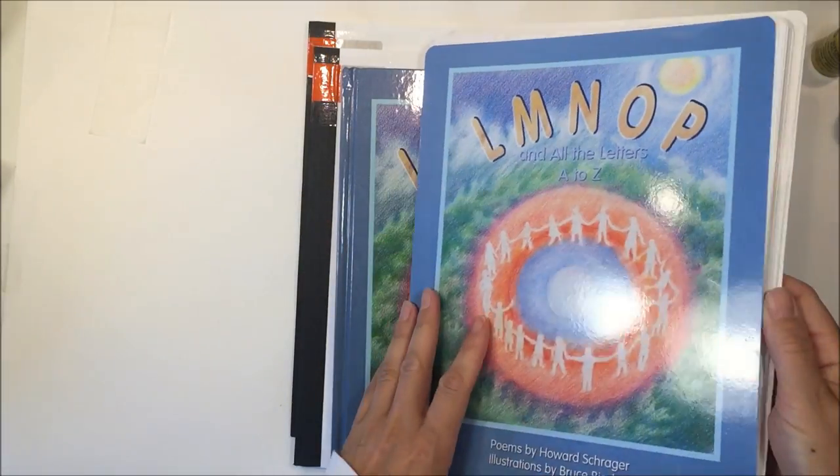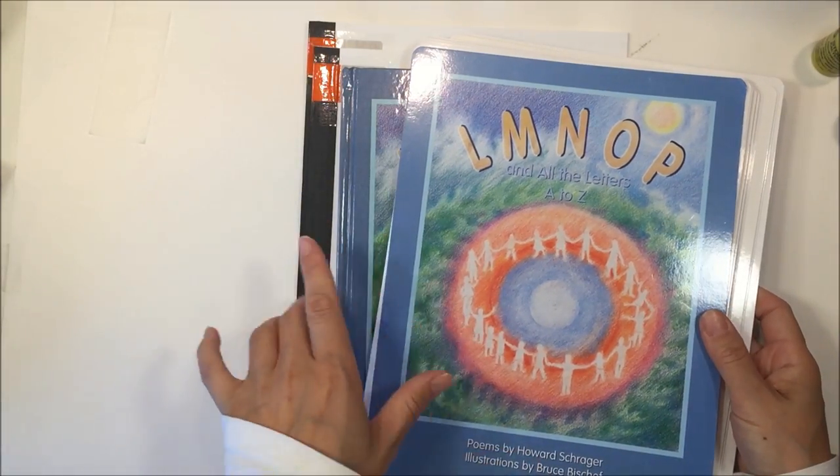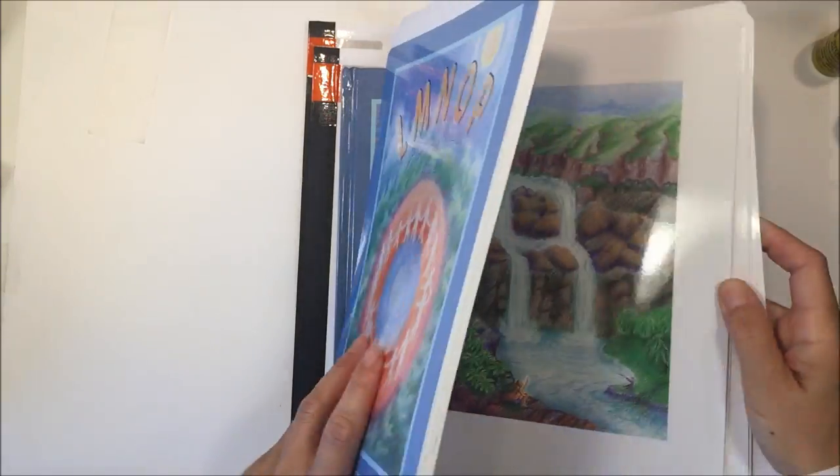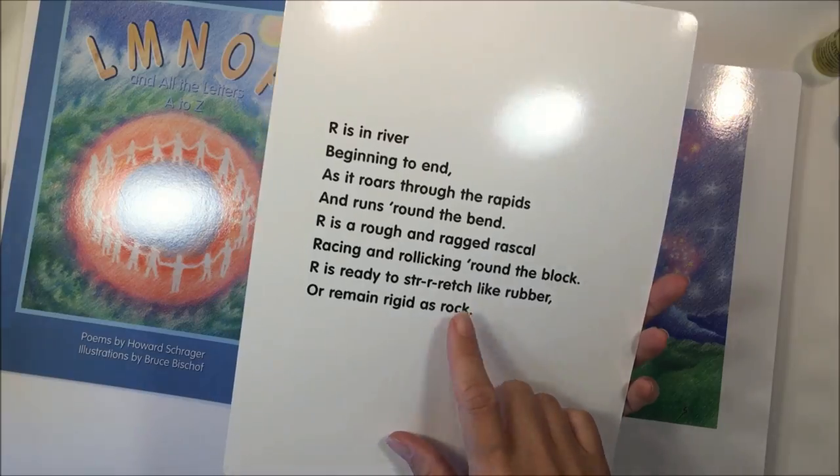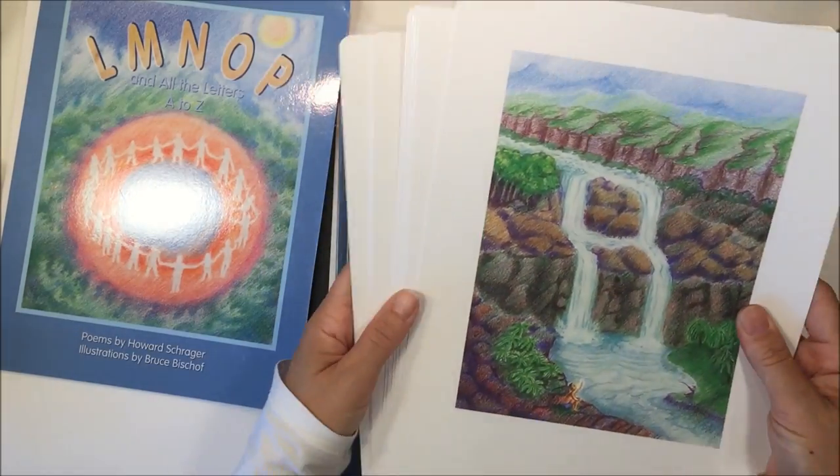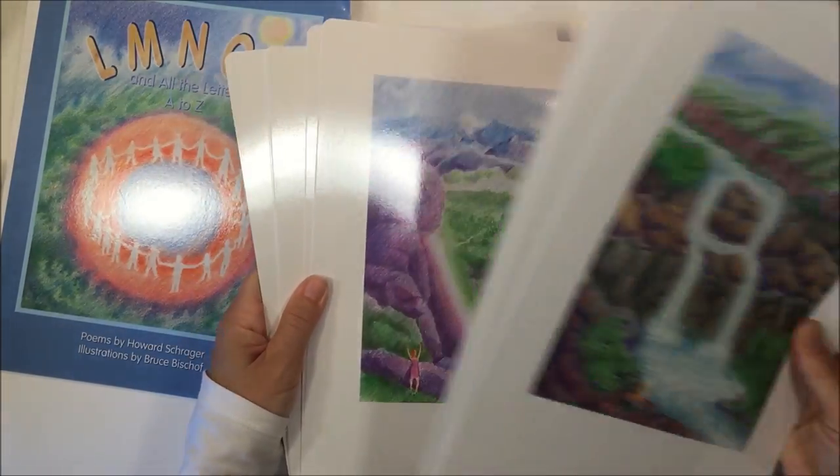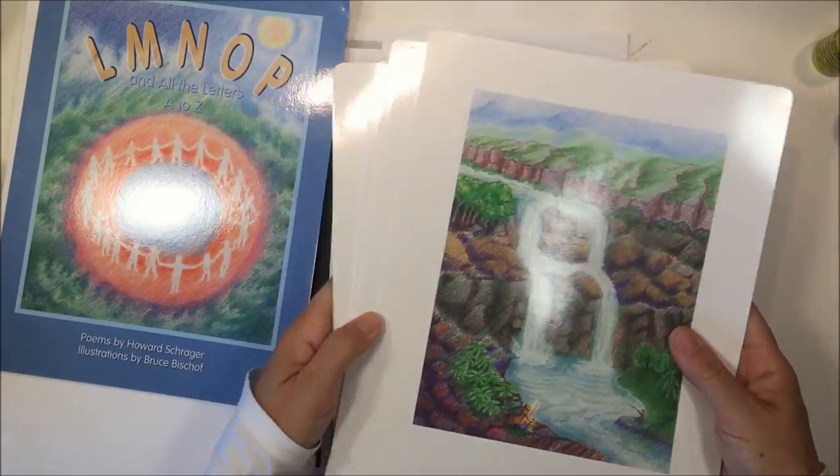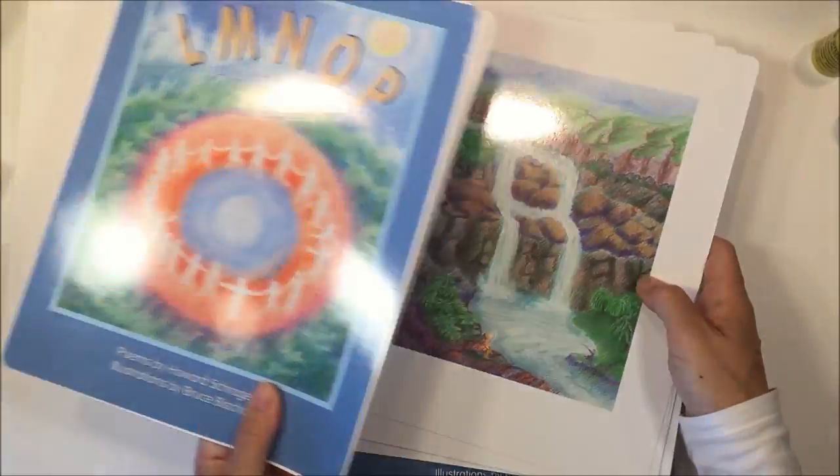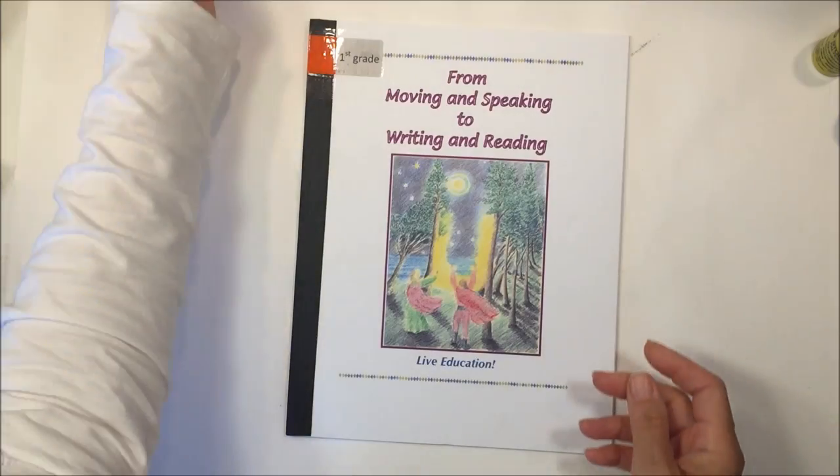You can purchase separately the LMNOP, letters A to Z, laminated illustrations with the poems on the back. This is a beautiful addition to any classroom. It will be really nice decorations or just for a child to have in front of him while he's drawing his own drawing into his main lesson book. This is really beautiful.